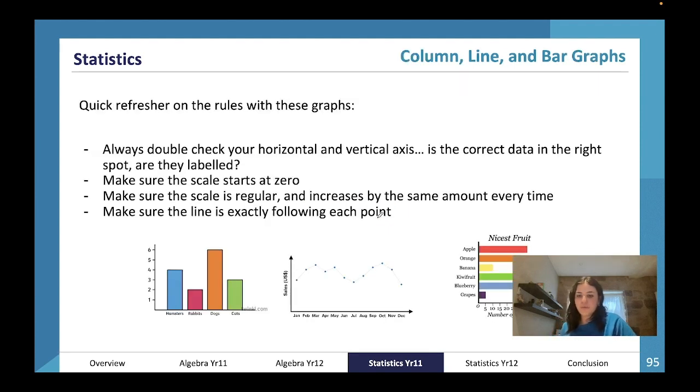Quick refresher on the rules with column, line, and bar graphs. Number one, always double check your horizontal and vertical axis. Make sure the correct data is in the correct spot and they're labeled. You always need to make sure your scale starts at zero, and if it doesn't you have to have that line that demonstrates you're skipping zero and starting at 20, for example. You also need to make sure that the scale of your data is regular and increases by the same amount every time—you can't write 5, 10, 50, 100.